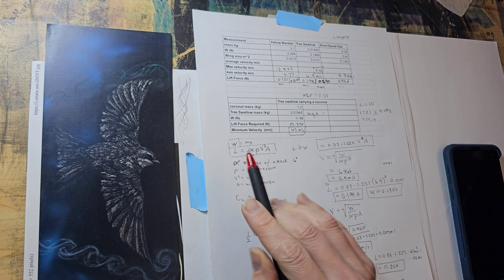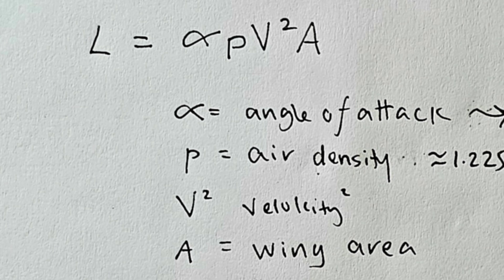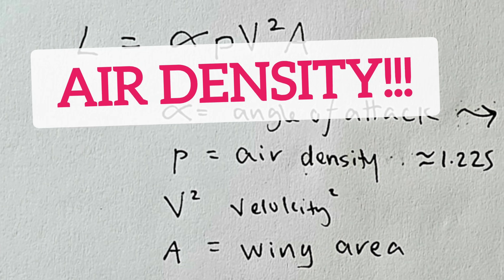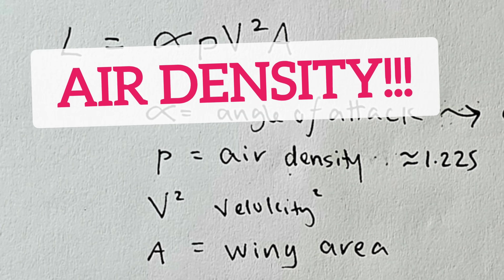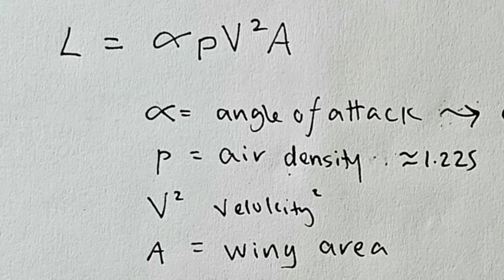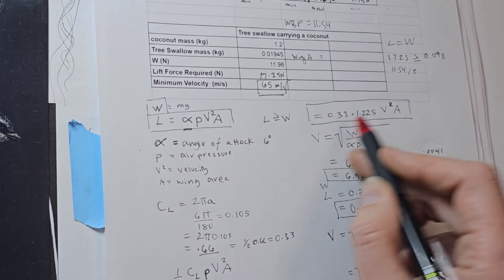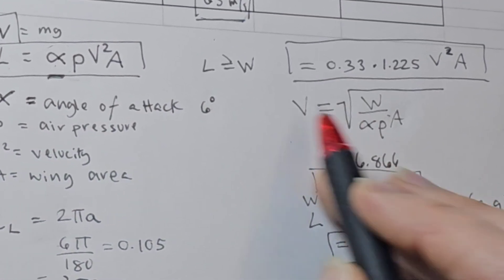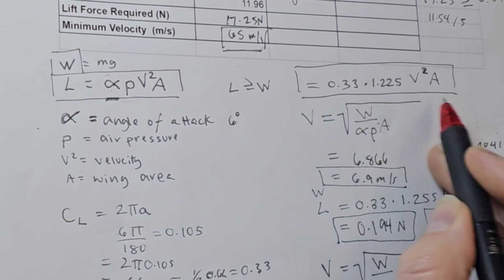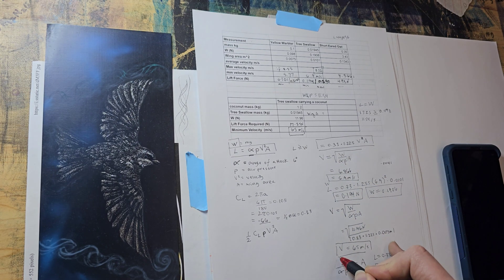I calculated this equation here — the lift force equals the angle of attack times the air pressure (which changes by altitude, but we're using standard air pressure at sea level) times velocity squared, multiplied by the wing area. And if you don't have the velocity, you can rearrange the equation to calculate the minimum velocity needed to keep the bird aloft — you take the square root of the rest of it — and then you get the minimum velocity for each bird to stay aloft.